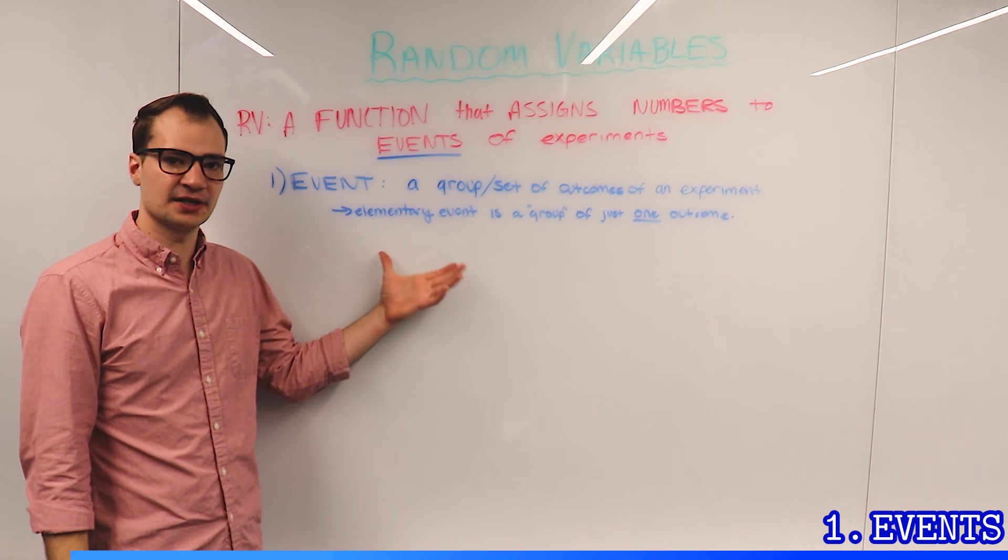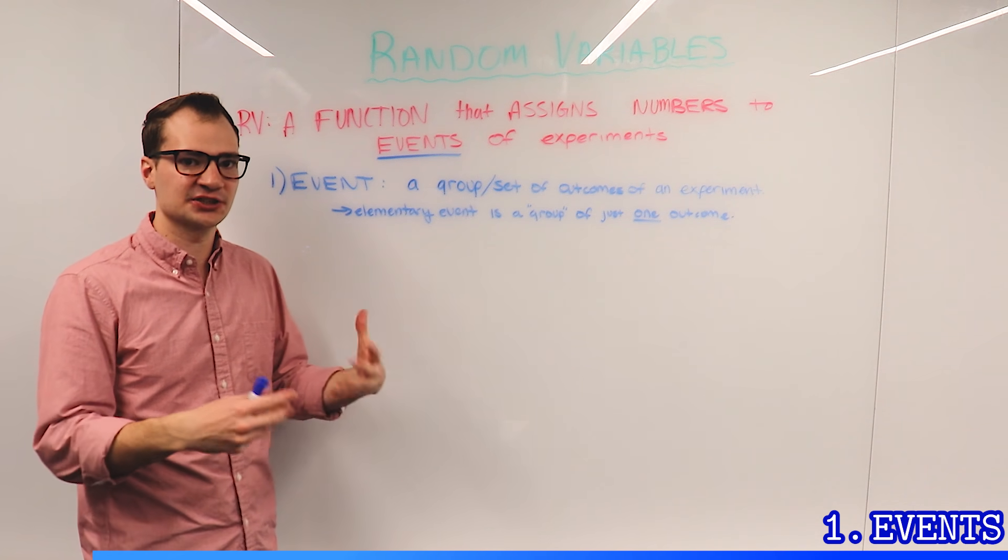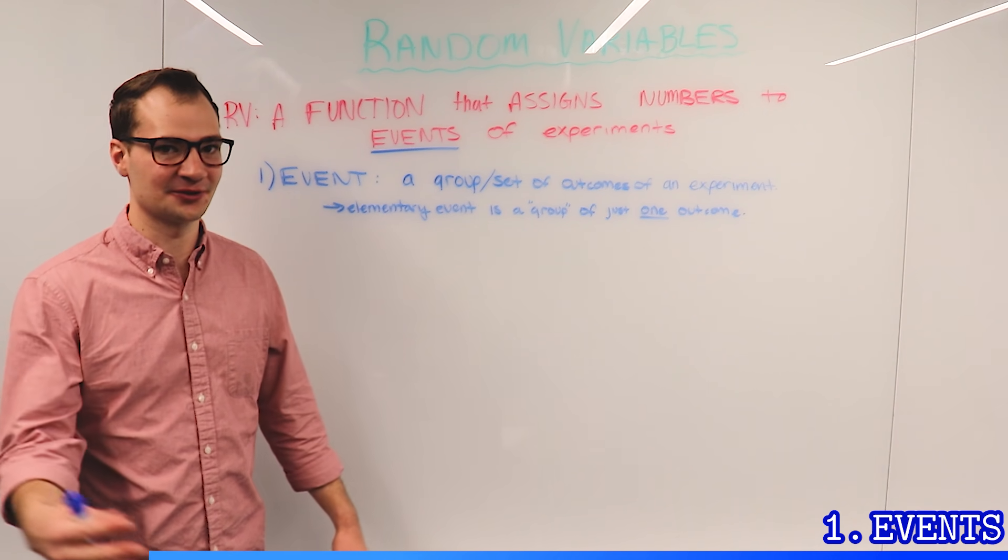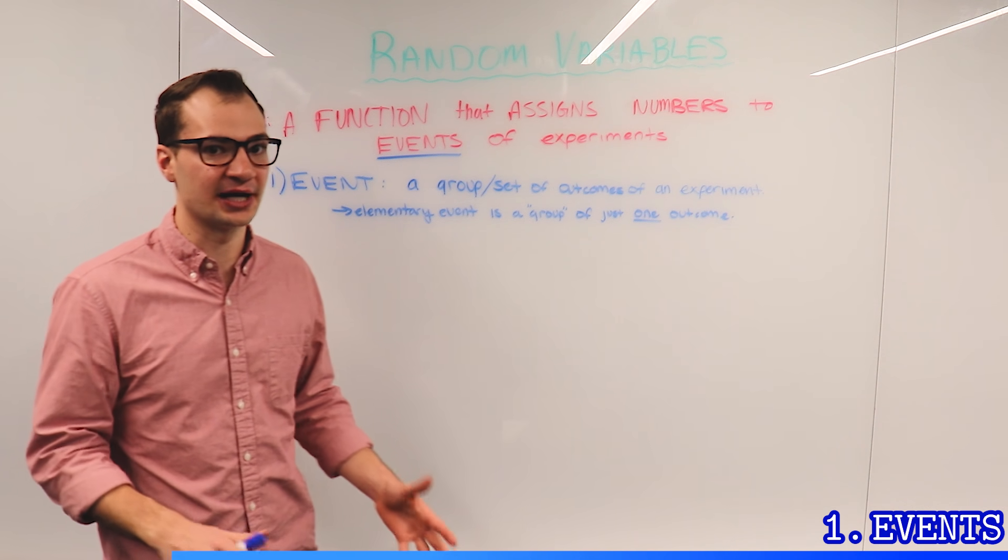The events that we're looking at are the actual outcomes of the experiment. For example, heads or tails, rains tomorrow, cloudy tomorrow. It doesn't have to necessarily be binary.